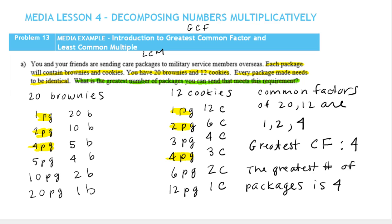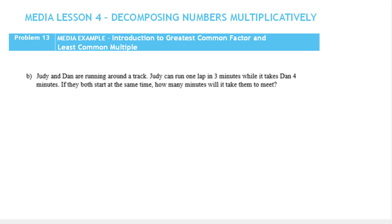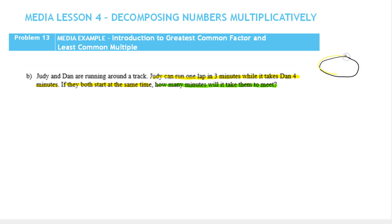Let's look at the next example. Judy and Dan are running around a track. Judy can run one lap in three minutes while it takes Dan four minutes. If they both start at the same time, how many minutes will it take them to meet?